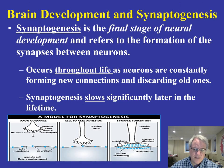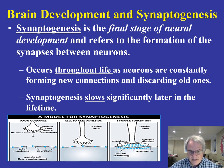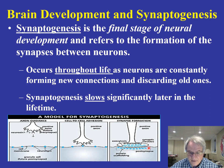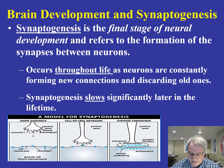Synaptogenesis is the final stage of neural development — the actual formation of synapses. It occurs throughout life; we're constantly producing new connections and discarding old ones, though this does slow down later in life. There's a model showing cell-to-cell adhesion taking place and the development of scaffolding that ultimately represents the post-synaptic area.